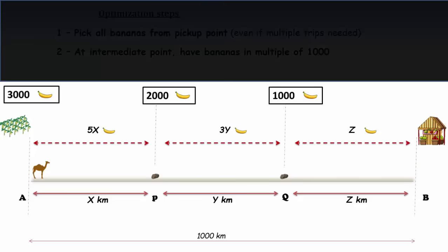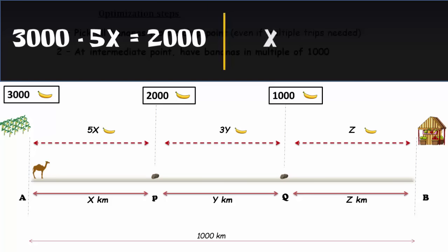Now, initially you had 3000 bananas out of which 5X bananas are consumed by the camel giving you 2000 at point P. So the value of X is 200. So the length of segment AP is 200 kilometers.